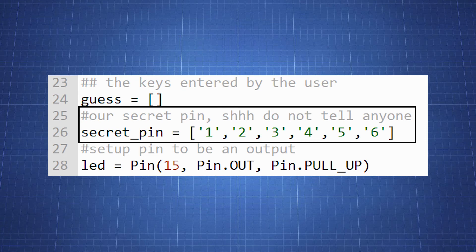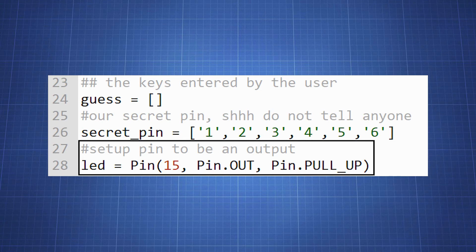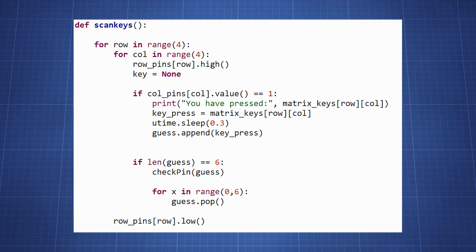We want to turn on an LED if the user guessed the pin correct. So we create a variable called LED and I will use GPIO15 to set it as an output and use the pull up resistor to limit the current to the LED. Now in our scan keys in this section every time we press a key we'll add this to our list guess. If the length of the guess is equal to six we will call the function check pin to see if the password matches. And after that we'll remove all the inputs from this list.